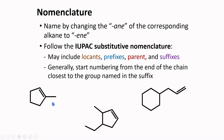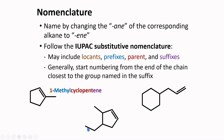For cycloalkenes, the naming starts from where the double bond is — carbon number 1. Carbon number 2 follows, and since a methyl group is attached to carbon number 1, this should be called 1-methylcyclopentene. The numbering should give substituents the lowest possible numbers, starting where the double bond is. So for a compound with both an ethyl and methyl substituent, the name is 4-ethyl-3-methylcyclopentene.